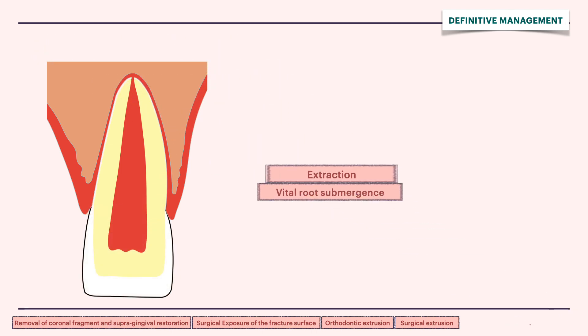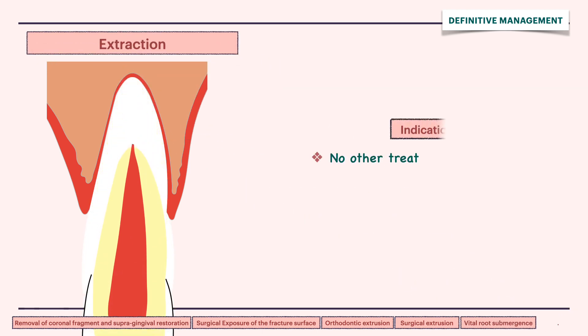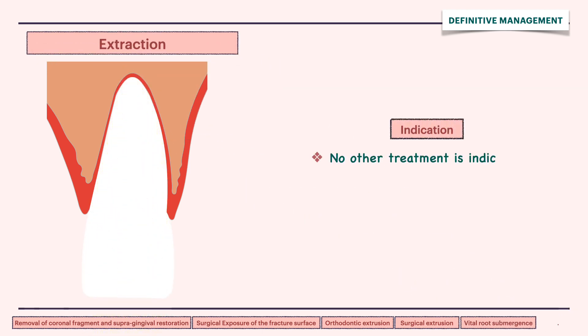Finally, extraction is the ultimate treatment option when no other treatment is feasible, such as in cases of vertical crown root fractures.